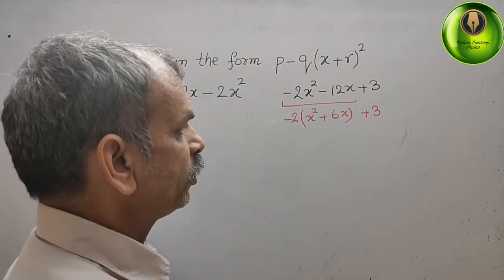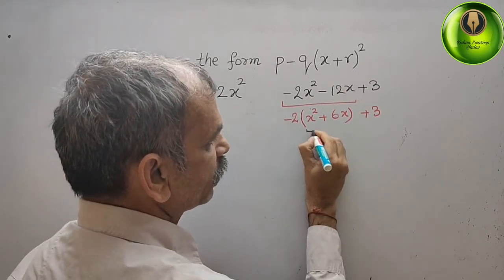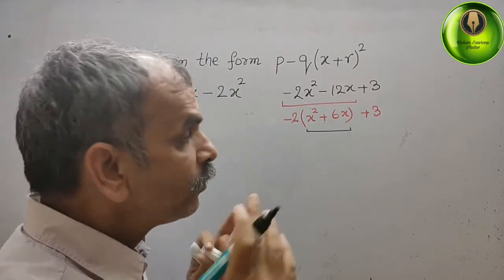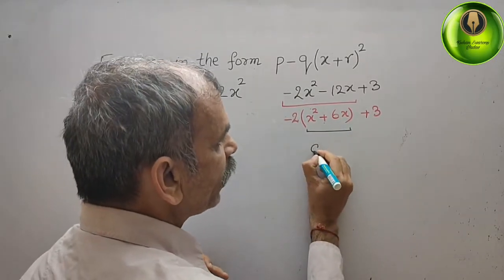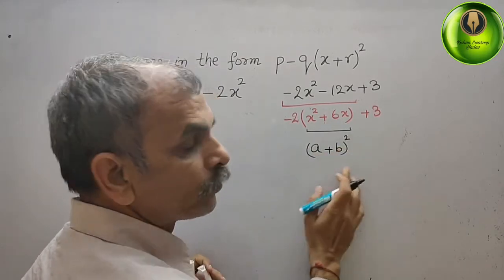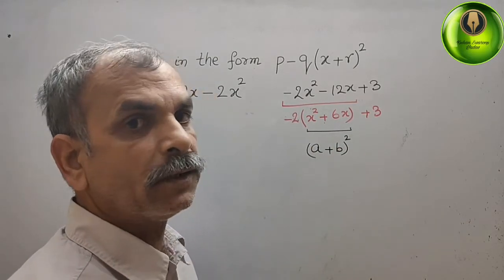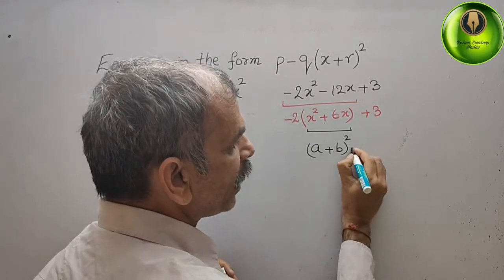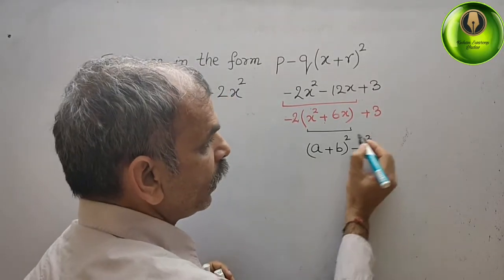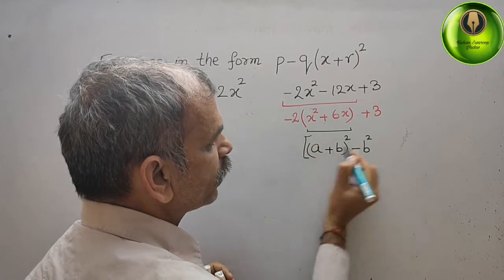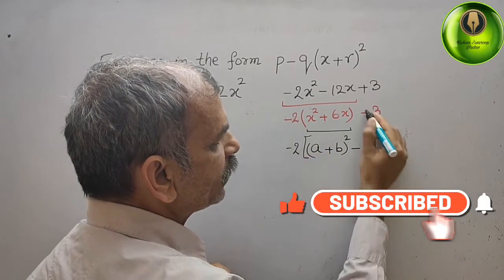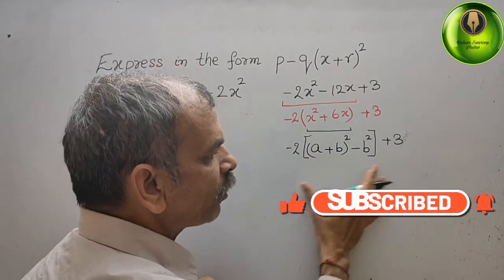Now we check this part only — the bracket x square plus 6x. Here the sign goes to plus, so we need to make an (a plus b) whole square. For (a plus b) whole square, we also need to subtract b square. The remaining term plus 3 is still there, so we put a bracket: minus 2 times [...] plus 3.